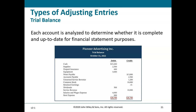Each account is analyzed on the trial balance to determine whether it is complete and up to date for financial statement purposes. You look at revenues, expenses, supplies, prepaid insurance, and unearned service revenue — asking whether you have the right amounts, what supplies are left, how much insurance has been used up, and whether any unearned revenue has been earned.